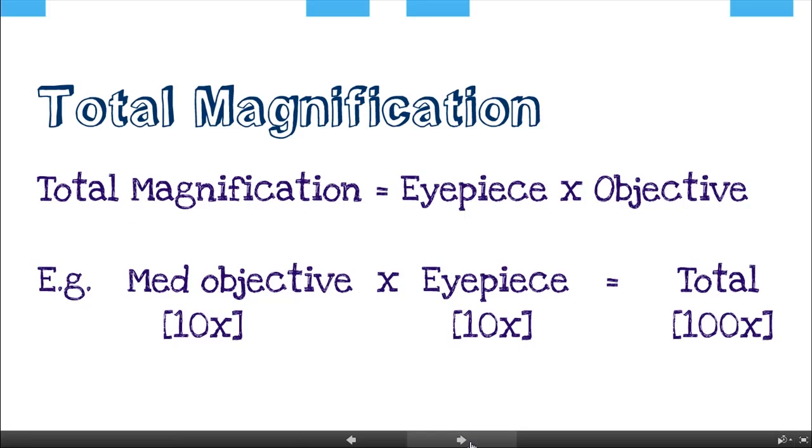The total magnification is the eyepiece times the objective. So if we're on the medium objective, for instance, it's ten times the eyepiece, which is another ten times, so ten times ten. The total magnification is going to be a hundred. So when you're dealing with magnifications, it's essentially always multiplying or dividing. We never sort of add or subtract. It's always a factor. So it's always times by ten, or divided by ten, et cetera.